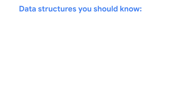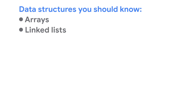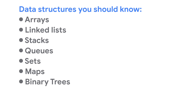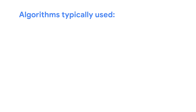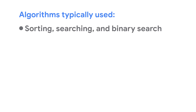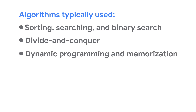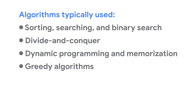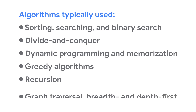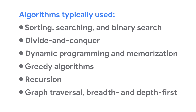You're also going to want to use appropriate algorithms and data structures. You should have a strong fundamental understanding of commonly used data structures like arrays, linked lists, stacks, and queues. You'll want to know sets, maps, trees, heaps, and graphs as well. It's also essential to know which algorithms tend to go along with each data structure. Algorithms that are used to solve Google problems typically include sorting, searching, and binary search. You should also be familiar with divide and conquer, dynamic programming and memoization, greedy algorithms, and recursion. And be sure to brush up on algorithms linked to specific data structures like graph traversal.